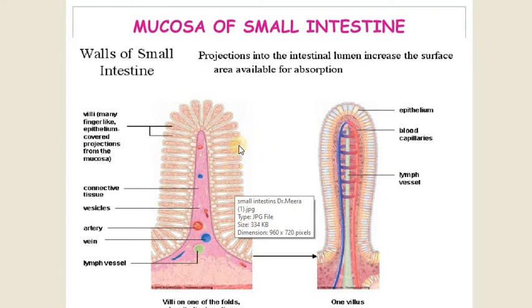As we know, the innermost layer of the small intestine, the mucosa, is thrown into multiple folds known as villi.